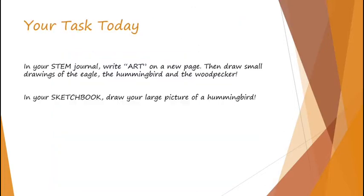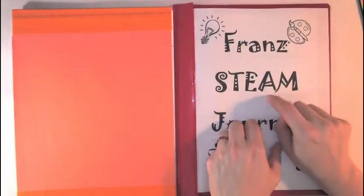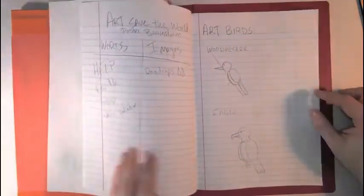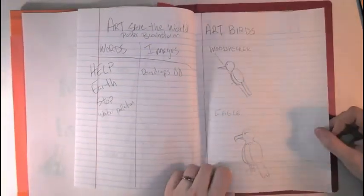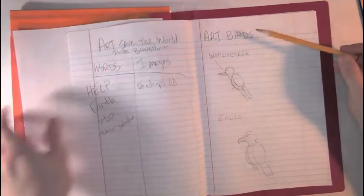The reason we needed our STEM journal is on a new piece of paper in your STEM journal, you're going to write art, and then draw a small drawing of the eagle, a hummingbird, and a woodpecker. Then in your sketchbook, you're going to do the large picture. So let's look at what I'm talking about here. I've got my STEM journal. We're going to open up your page and just find some place that you can draw something on. It doesn't have to be a huge page. Remember, these are just going to be small versions.